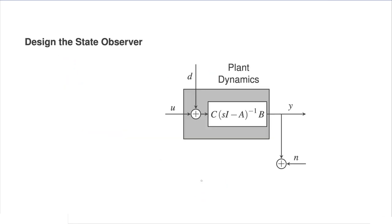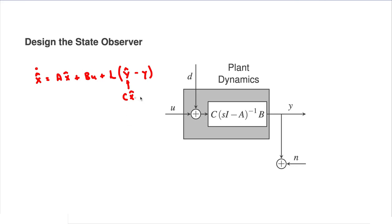How do we implement our state observer? From the previous lecture, the state observer is described by x-hat-dot equals A·x-hat plus B·u plus L(C·x-hat - y). Here x-hat is our estimate of the state at time t. The A, B, and C matrices come from the state space model of the open loop system, and the matrix L is the one we just designed.